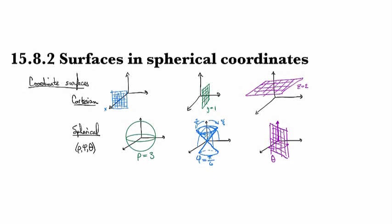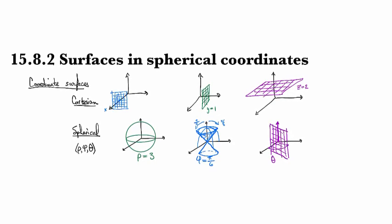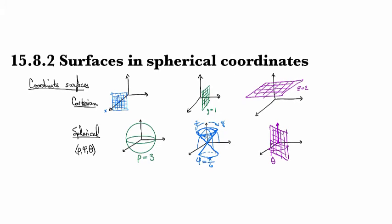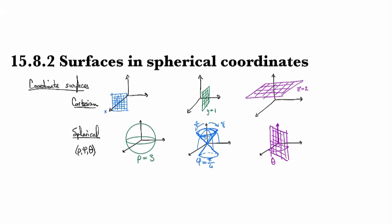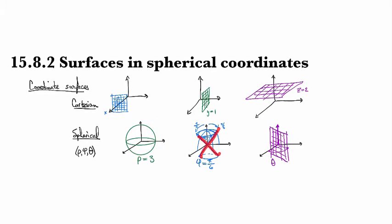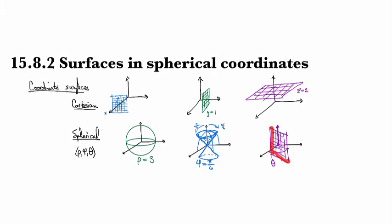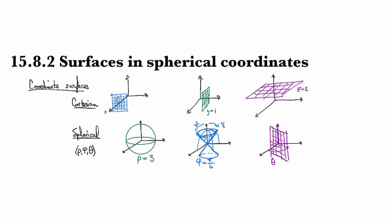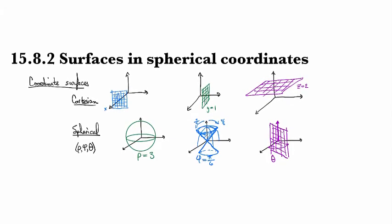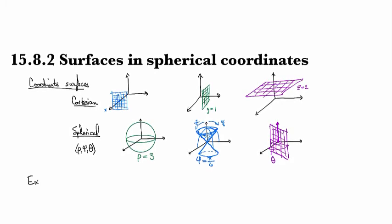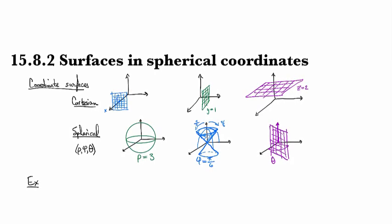Those are the coordinate surfaces, the most basic ones. If you're setting up a region for a triple integral and you notice that it's got spherical surfaces, or cones and stuff like that, or maybe even a slanted plane, then it's probably a good candidate for being set up in spherical coordinates.